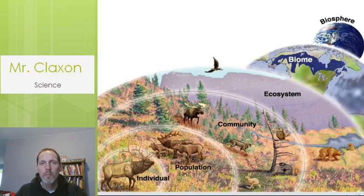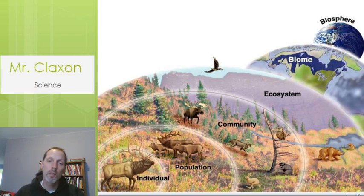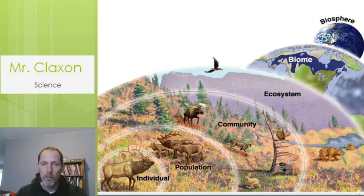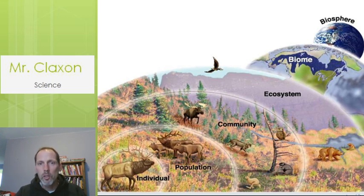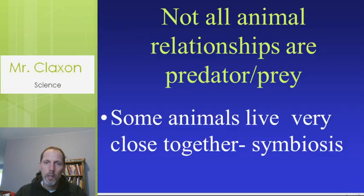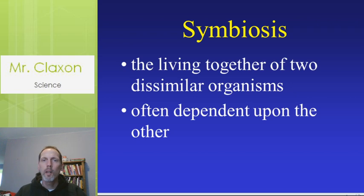Hey guys, it's good to be here with you. There are just a few more things we need to go over concerning ecosystems. We've already talked about how within an ecosystem you've got predators and prey, biotic factors, abiotic factors that all influence the ecosystem. But sometimes there are some biotic relationships that aren't quite predator-prey, and so we're going to look at some of those. One of them they call symbiosis.